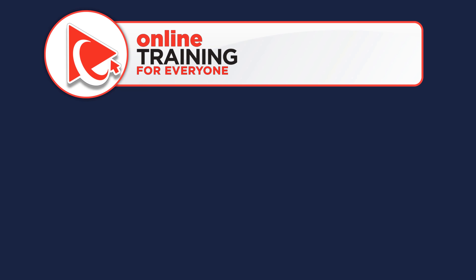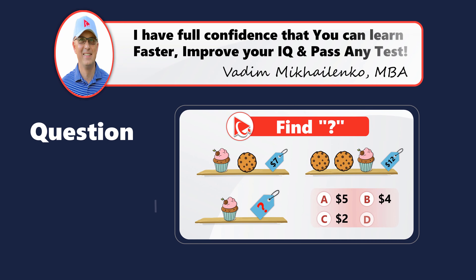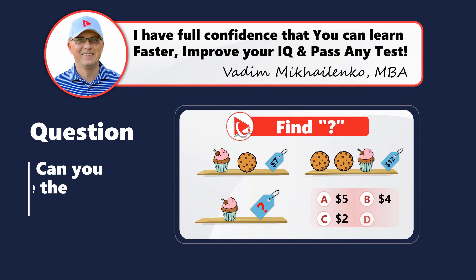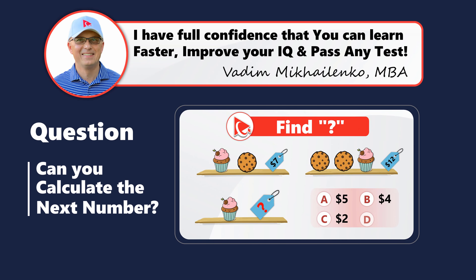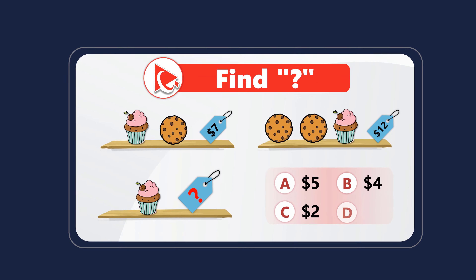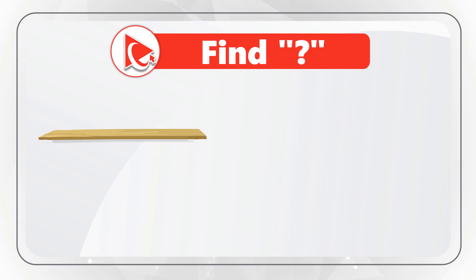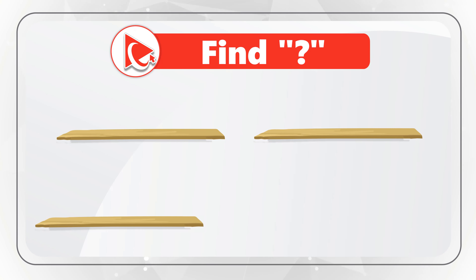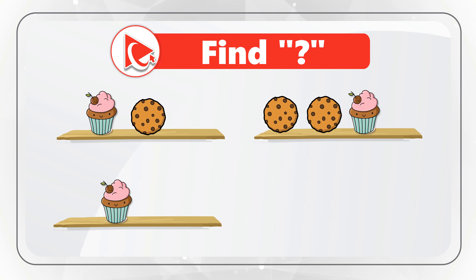What's interesting about this problem is that it seems unsolvable, but if you make one correct assumption, it's so easy to solve it. You're presented with a shelf of items from a coffee shop, and the items are cupcakes and cookies. There are three sets of items.